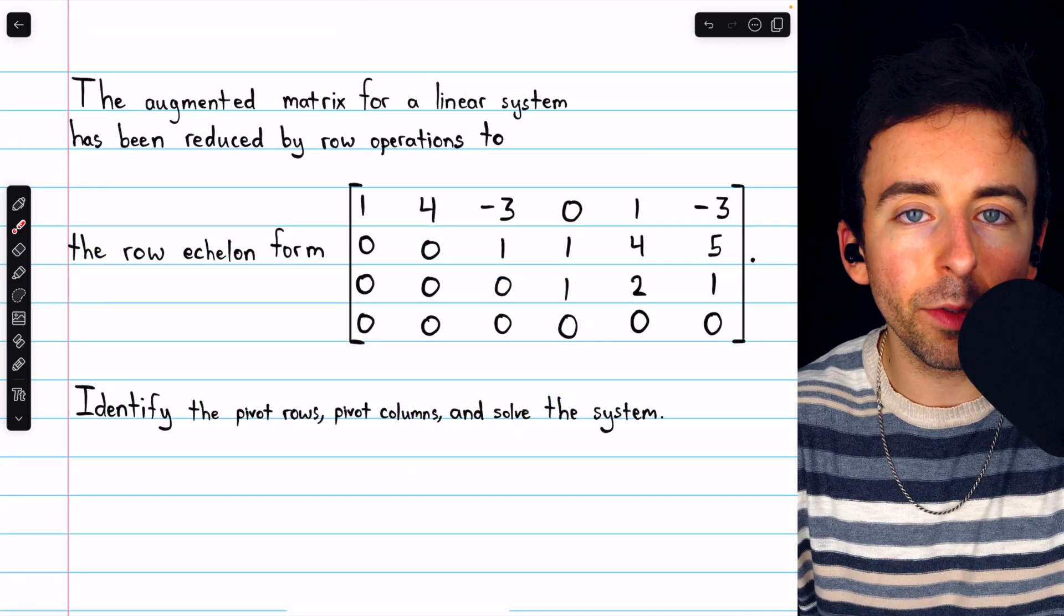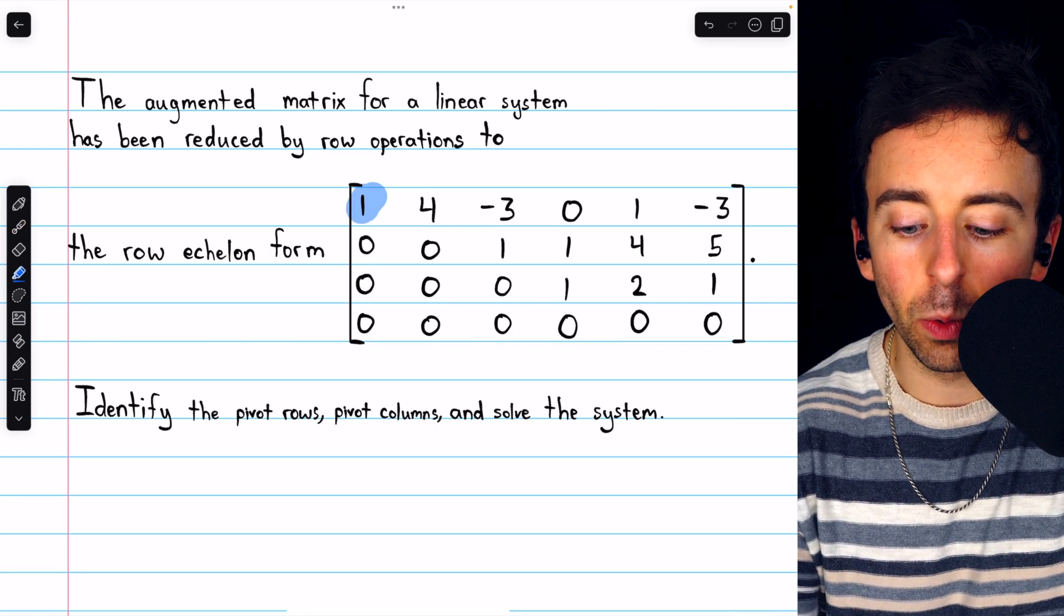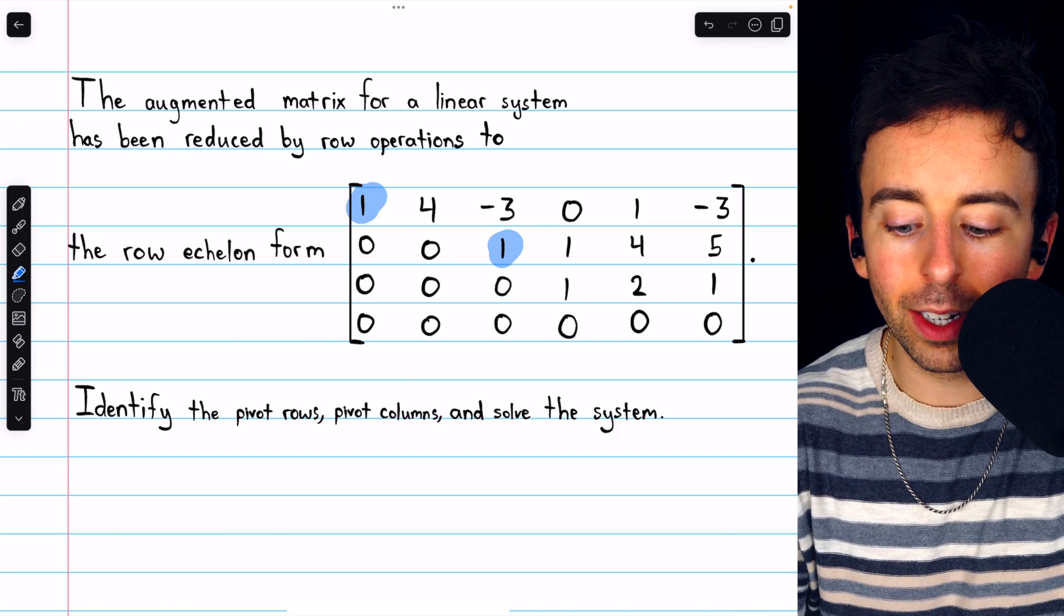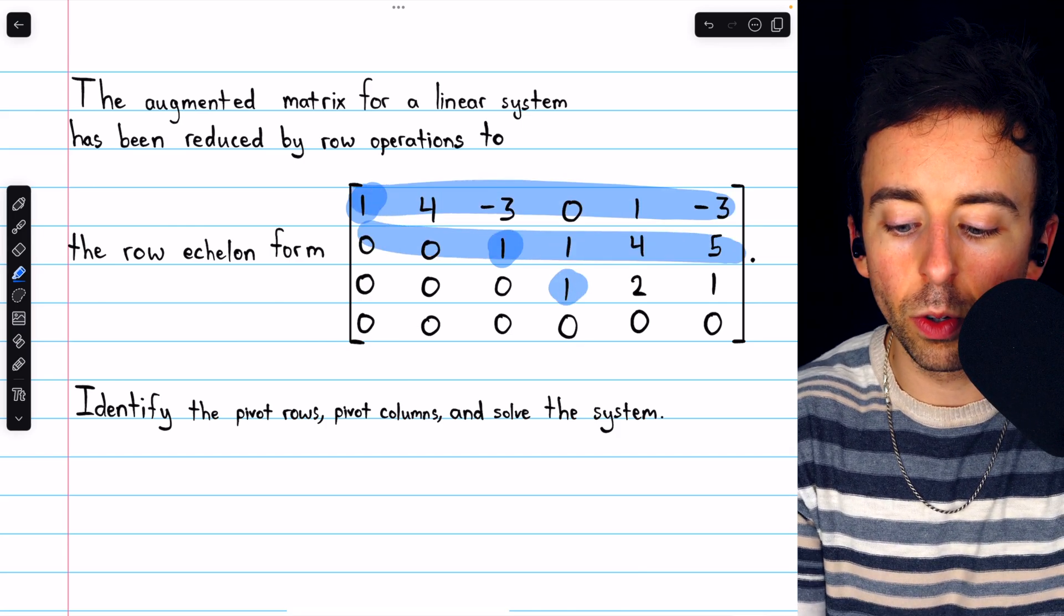Let's begin by identifying the pivot rows. Those are the rows that contain the leading ones. We see a leading one there, a leading one there, and a leading one there. Hence, the pivot rows are rows 1, 2, and 3.